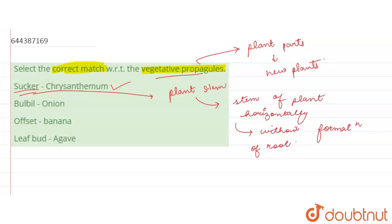The second pair says bulbil and onions. Now bulbil is what? It is a fleshy axillary bud. So at the place of axillary buds, this fleshy axillary bud forms and that is called as a bulbil. But in onions we have bulbs, so this pair is incorrect.